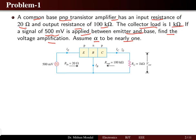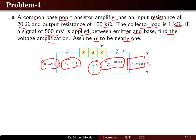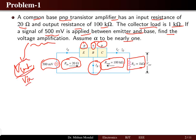Here we can see that the transistor is in common base configuration mode and the supply voltage is given as 500 millivolts. The input resistance of 20 ohms and the output resistance of 100 kilohms are mentioned and the collector resistance is 1 kilohm. The transistor is a PNP transistor. We have to determine the voltage amplification, which is the voltage gain — output voltage divided by input voltage. Output voltage is calculated at the collector resistance and input voltage is the supply voltage.